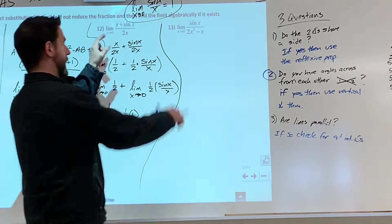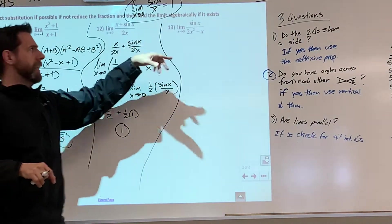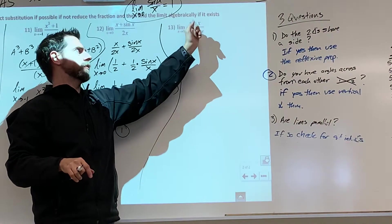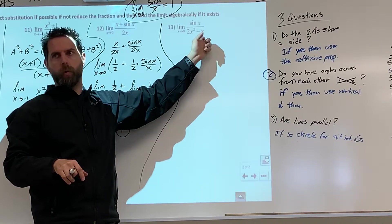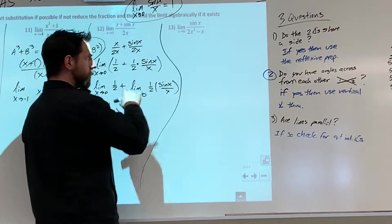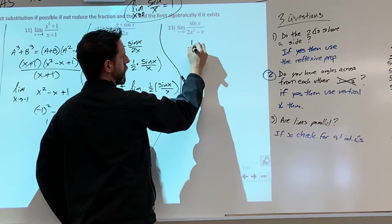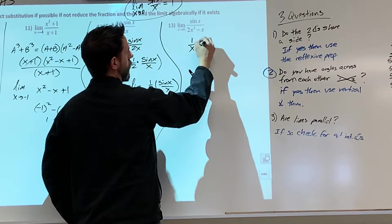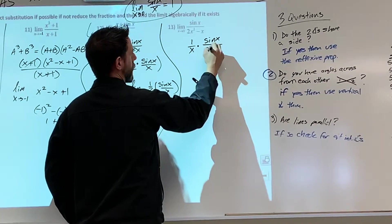Yes, right here. We cannot do this same concept. We cannot be like, this is sine of x over 2x squared, and then sine of x over negative x. It doesn't work like that. Only when there's one thing that is on there. So what we can do, however, is we can actually factor out an x. So we can do this as like 1 over x times sine of x over, and this would be 2x minus 1, right?